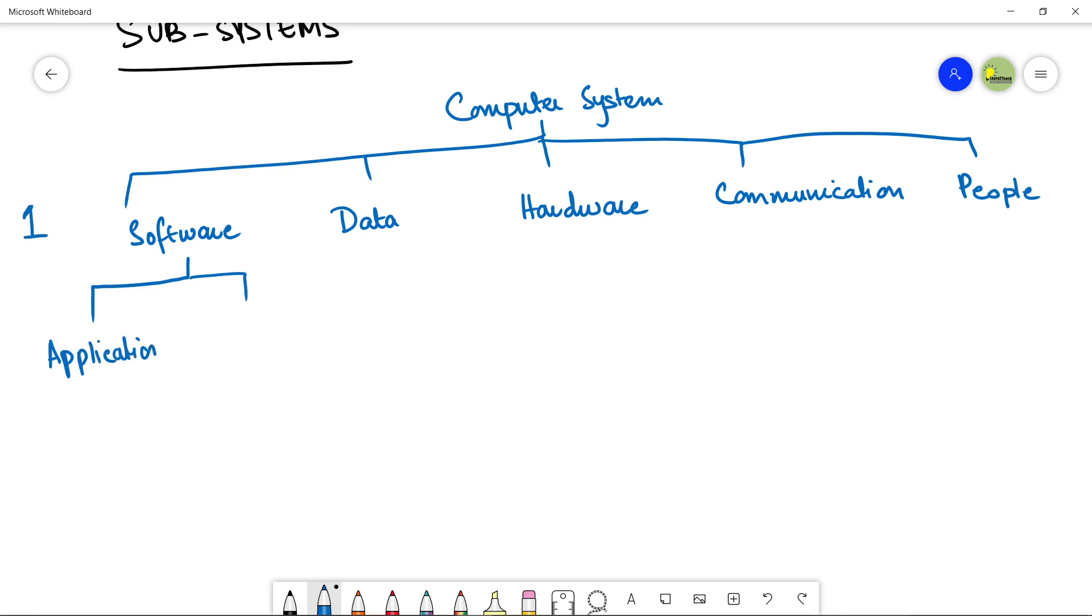An application software can be a word processing software. It can be anything. A dictionary, an alarm app, or whatever. The applications that you use in your computer. Then we have a system software. System software can be your operating systems, your drivers, and so on.